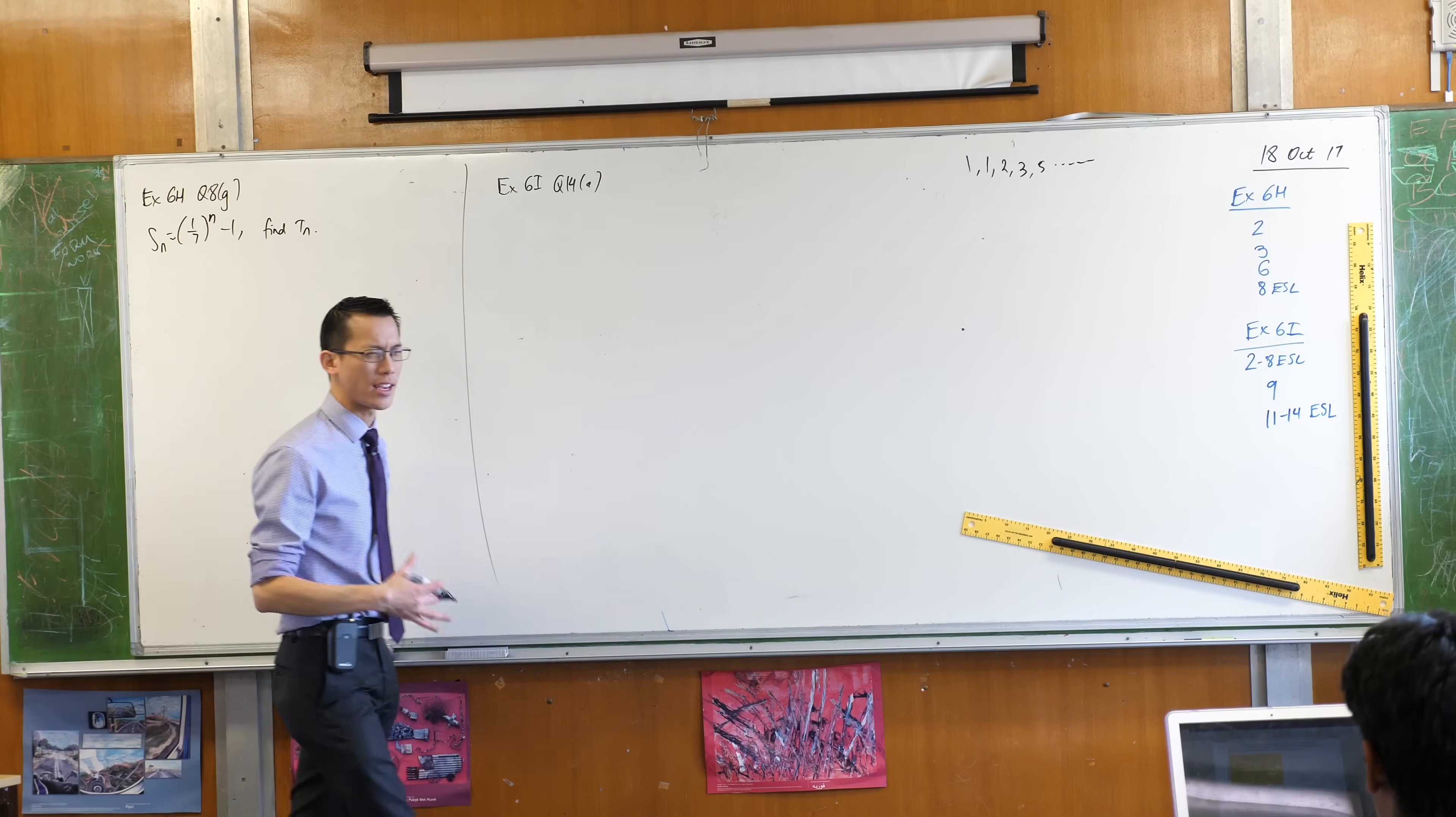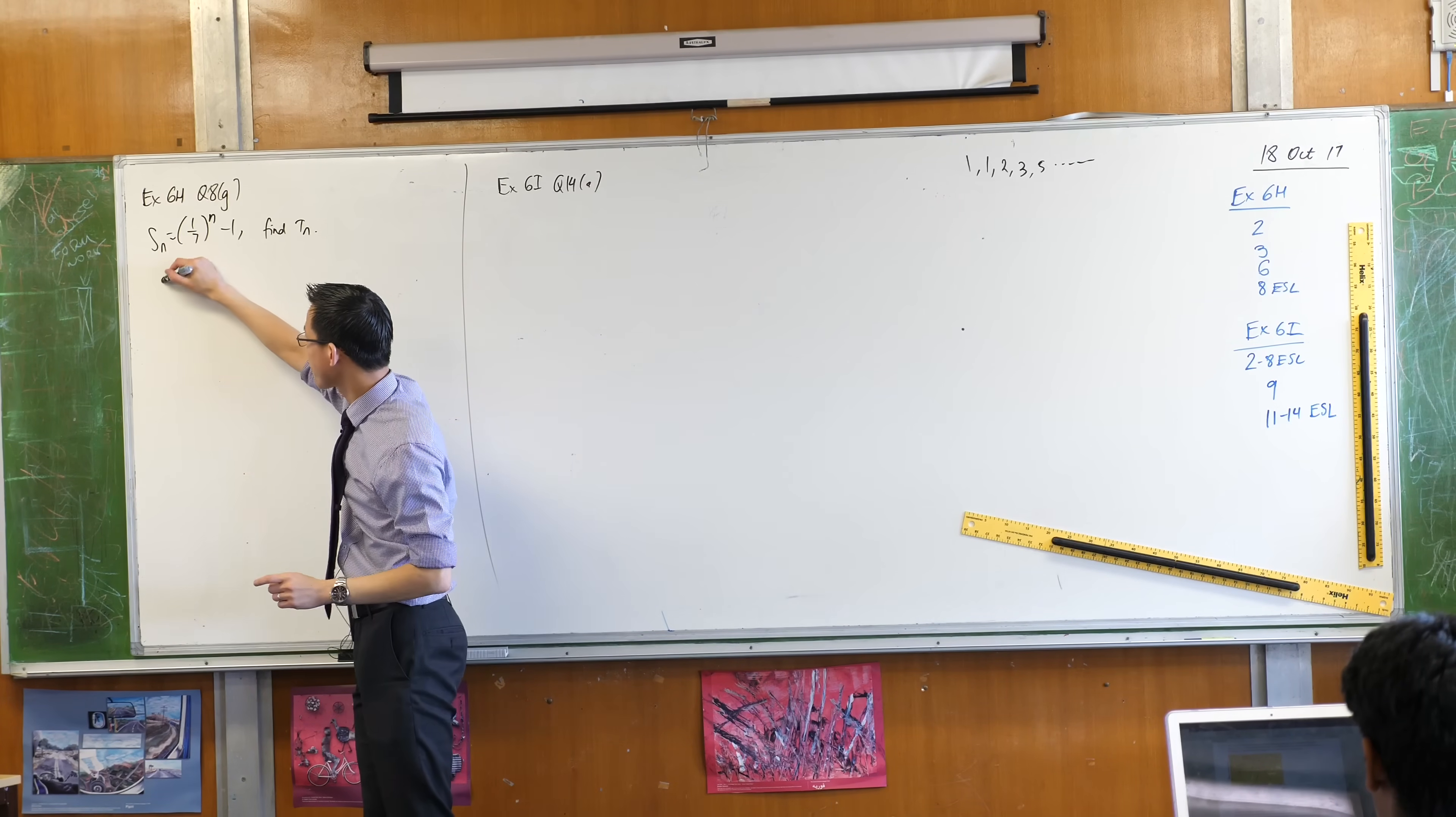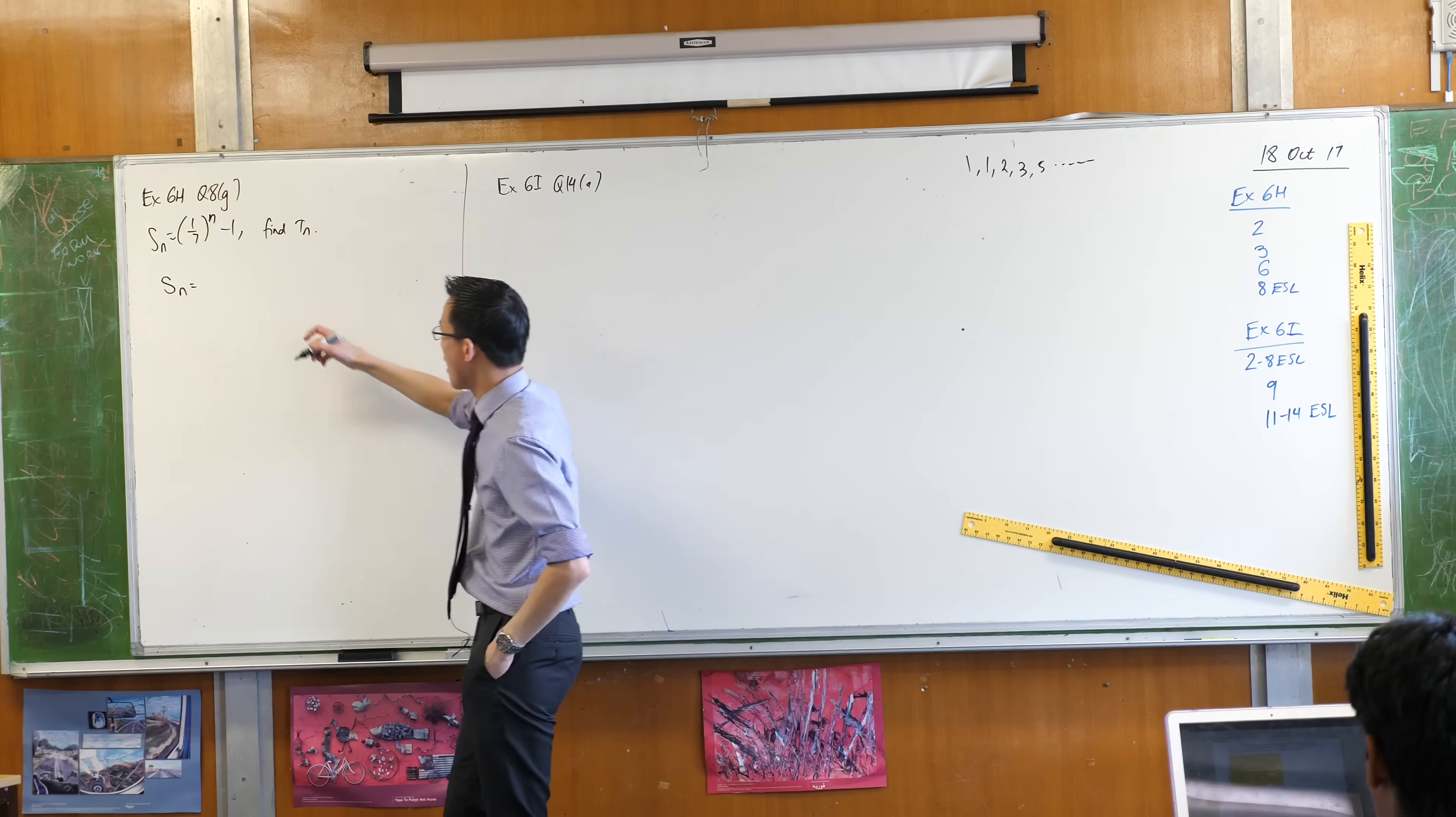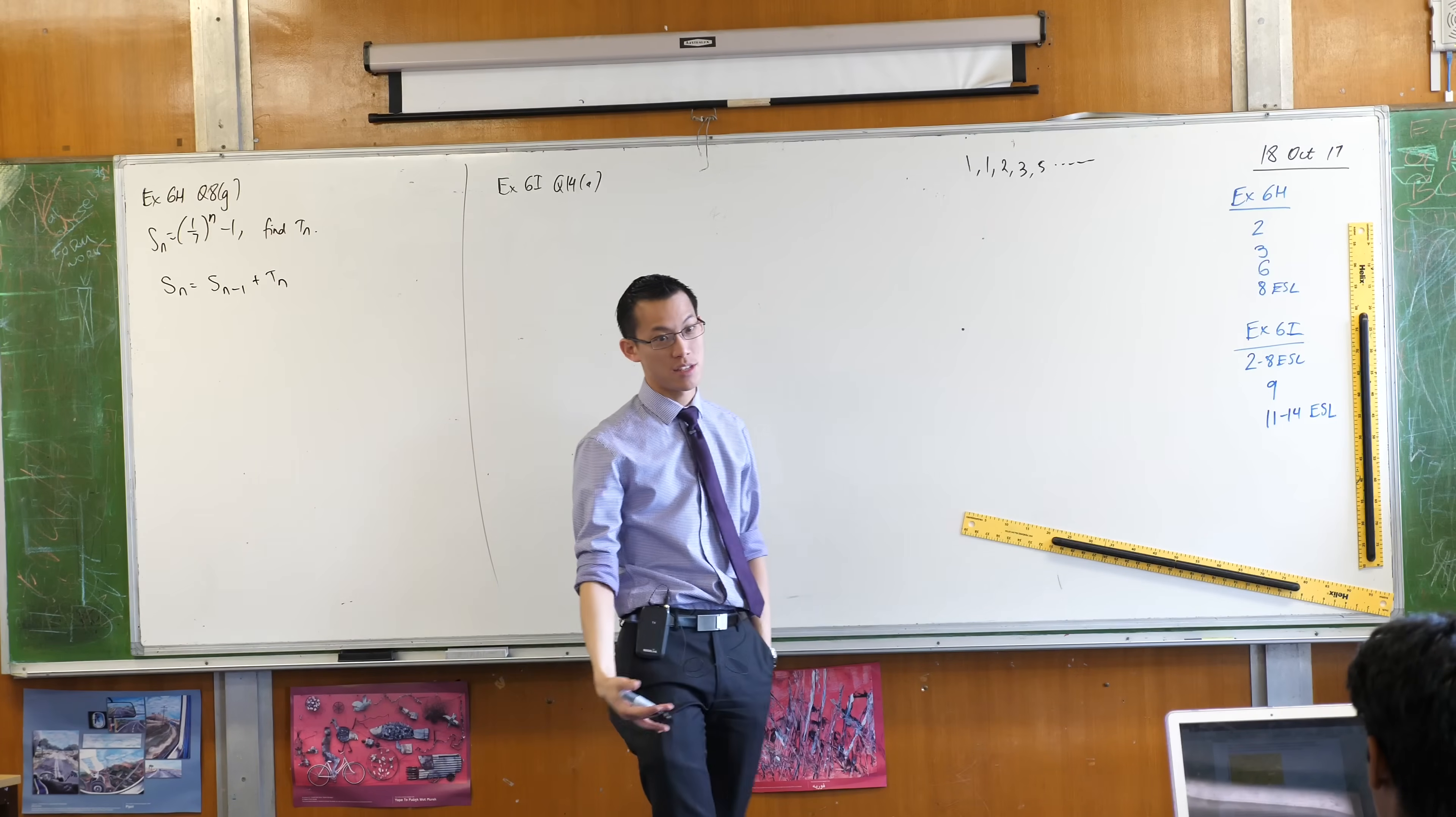So what we're gonna have to try and take advantage of is what I mentioned with the recursive definition of a sequence, in terms of the partial sum. This is what we wrote down before, that if you want to work out what the nth partial sum is, a way you can think about it is as the previous partial sum plus the next term, plus the missing term.